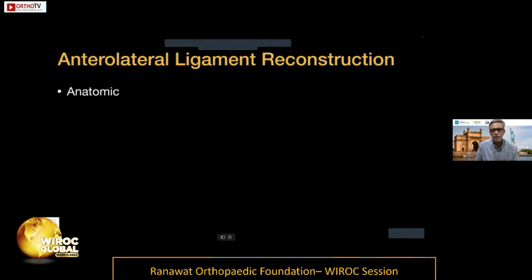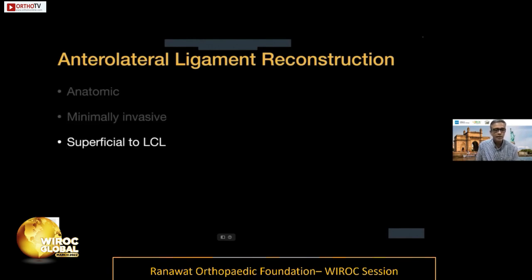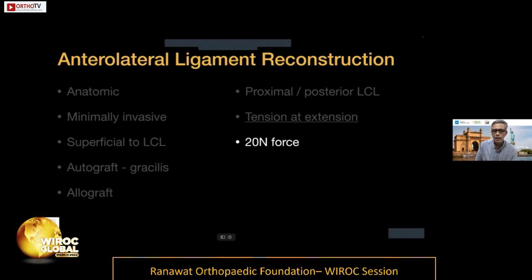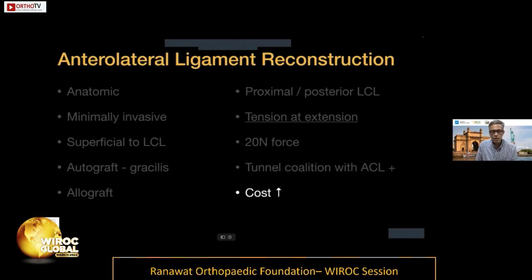An anatomic anterolateral ligament reconstruction can be performed in a minimally invasive fashion, placed superficial to the LCL, using autograft or allograft. The femoral tunnel must be proximal and posterior to the lateral collateral ligament, tensioned at full extension with at least 20 Newtons of force. Drawbacks include potential tunnel collision with the ACL reconstruction tunnel, graft availability issues if using hamstrings autograft, and higher cost due to the need for three screws.